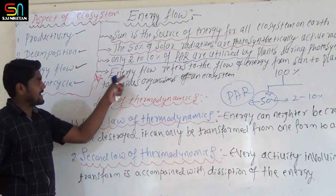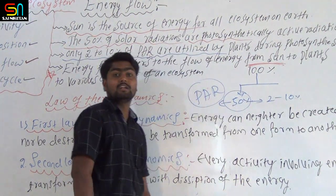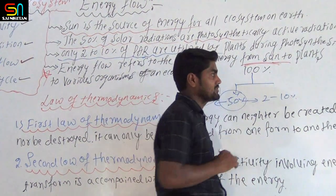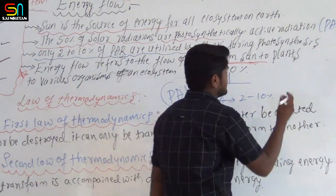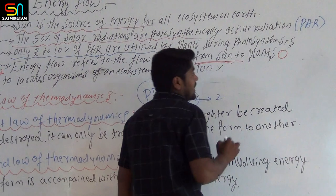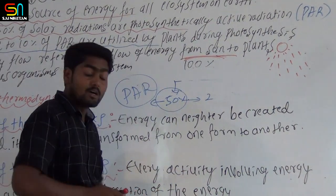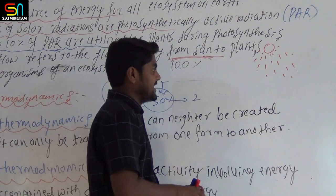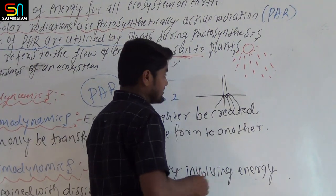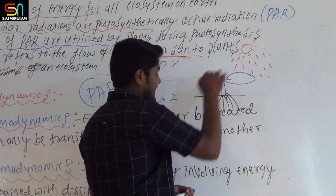Energy flow refers to the flow of energy. The sun is the ultimate source of energy. Energy flows from the sun to plants to various organisms of an ecosystem. The sun has photosynthetically active radiations — 50% of radiations are photosynthetically active. Using those radiations, the plant prepares their own food by a mechanism called photosynthesis.